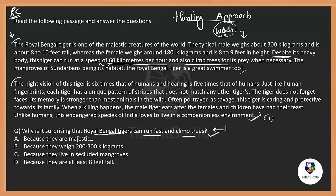Despite its heavy body, this tiger can run at 60 kilometers per hour and also climb trees. Is it because of majestic? No. Is it because of 200 to 300 kilograms? Yes — it talks about the weight. Because despite of its heavy weight, which is nothing but 200 to 300 kilograms. 'Because they live in secluded mangroves' is not mentioned, and 'because they were 8 feet tall' is about height, not weight. The 'despite' is all about the weight part, so only option B can be the correct answer. The hunting approach can give you answers for direct questions. For indirect questions like the theme of the passage, you have to read. But for direct questions, you can use the hunting approach — a very good technique.